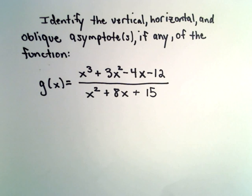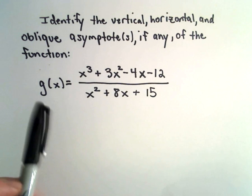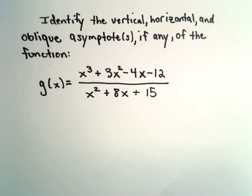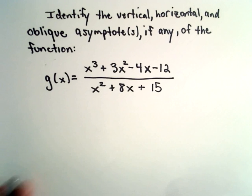In this example, we're going to identify the vertical, horizontal, and oblique asymptotes, if any, of the function g of x equals x to the third plus 3x squared minus 4x minus 12 divided by x squared plus 8x plus 15.